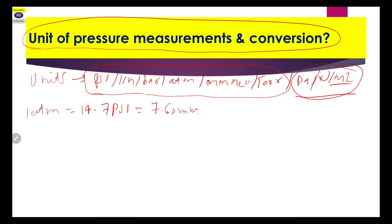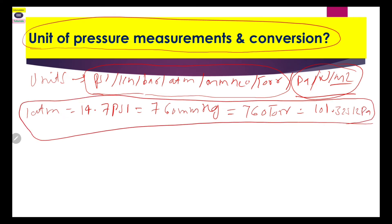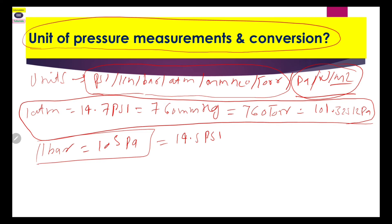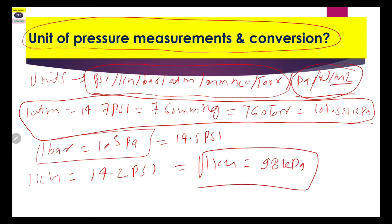The main conversion formula: 1 atmosphere = 14.7 PSI = 76 mmHg = 760 torr = 101.325 kilopascal. Another important one: 1 bar = 10^5 pascal. Also, 1 bar = 14.5 PSI, and 1 kg = 14.2 PSI, and 1 kg is generally equal to 98 kilopascal. You can note down all these unit conversions in your notebook.